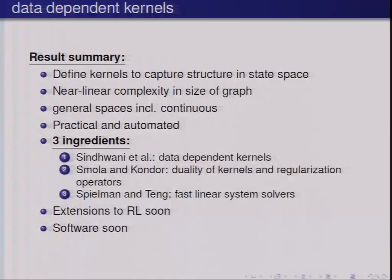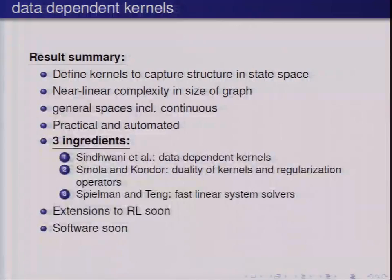In summary, we've defined kernels to capture various kinds of structure in different kinds of spaces in a very general way, applicable in lots of different domains. We can now do this quickly — near-linear complexity in the size of a graph built to capture that structure. It's practical and automated with nice cross-validation. The three key ingredients are: the general construction of Sindhwani et al., the duality between kernels and regularization operators, and the fast linear system solvers of Spielman and Teng. Once you know those three ingredients, putting them together is fairly straightforward.